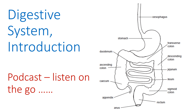Welcome to this podcast where we're going to be thinking about the digestive system, or the gastrointestinal system. 'Digestive' refers to its function, whereas 'gastrointestinal' describes the whole system, pointing out that it includes the gastric and the intestine — the stomach and the bowels.